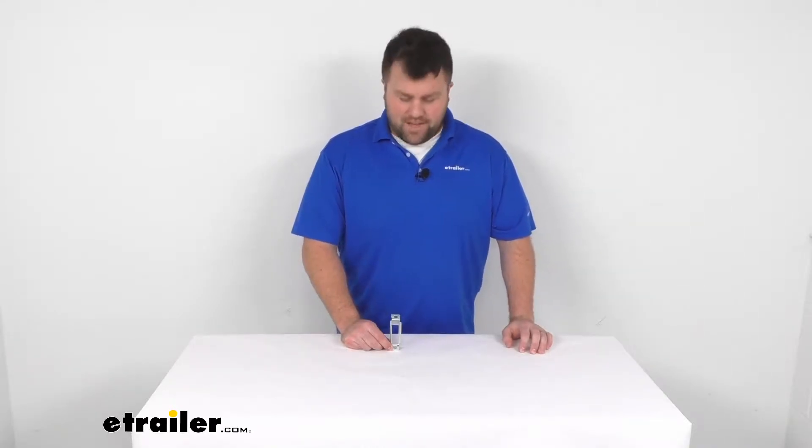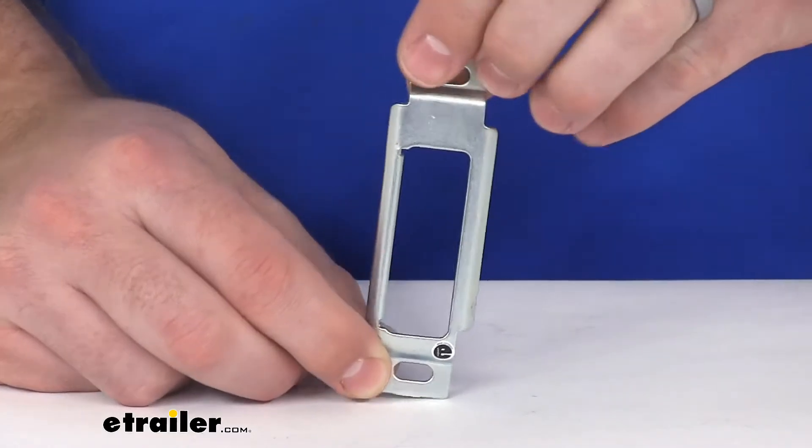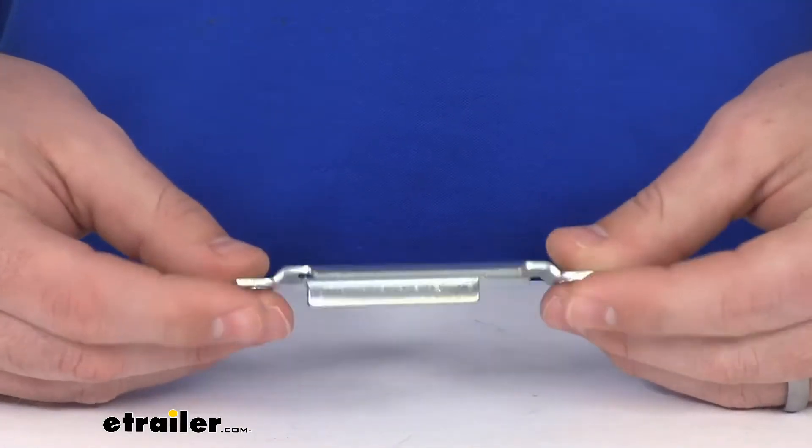Hi there, I'm Michael with eTrailer.com. Today we're going to take a quick look at the replacement strike plate for your Bauer RV door locks.